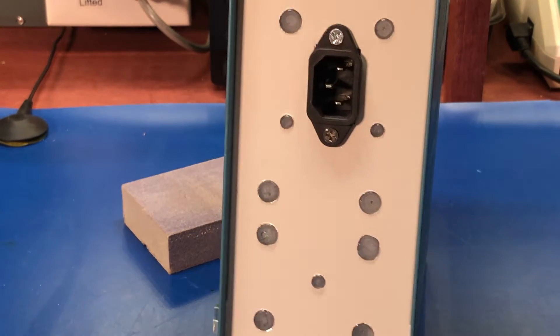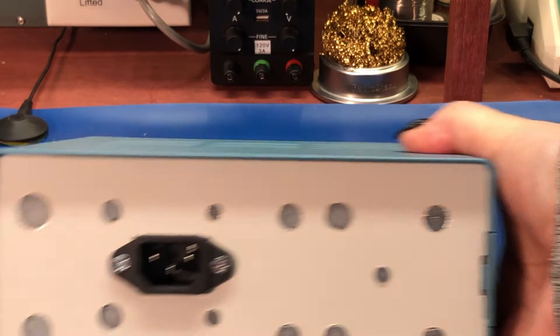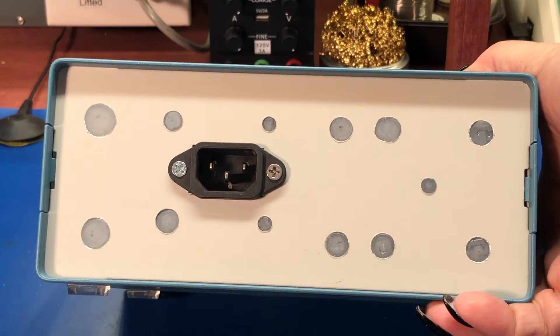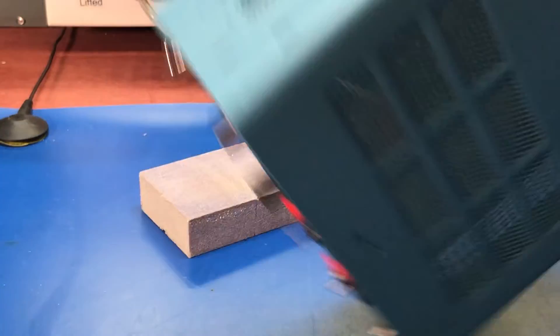And if we take a look on the back, it looks a little ugly because I misdrilled everything, but that's all right. Just filled them in with some hot glue and we've got our IEC power connector there.